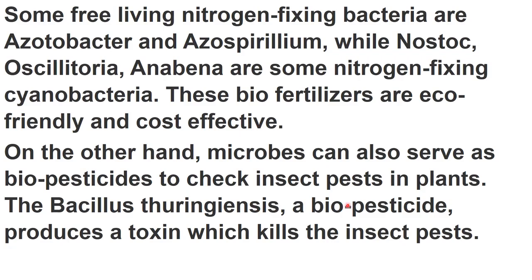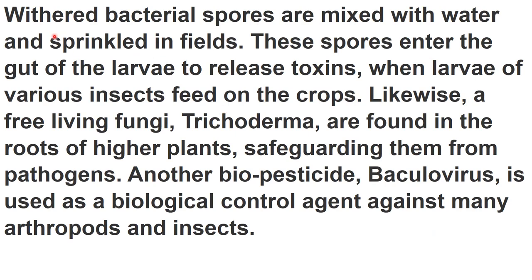For example, Bacillus thuringiensis is a biopesticide that produces a toxin which kills insect pests when an insect eats that plant. Bacterial spores of Bacillus thuringiensis are mixed with water and sprinkled in fields. These spores enter the gut of the larva of the insect, where the toxin is released inside the gut, killing the insect.